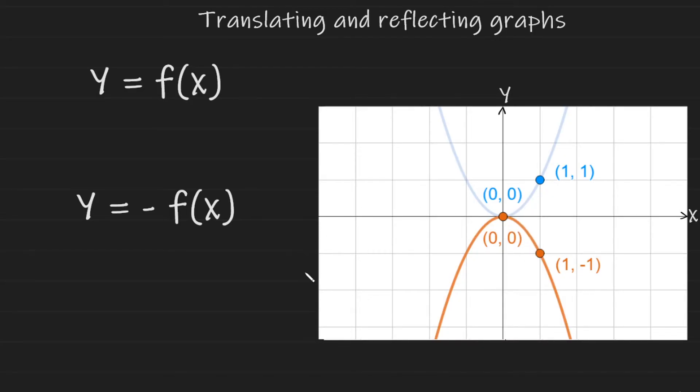We can conclude that applying a negative to the outside of the function will reflect the graph across the x-axis.